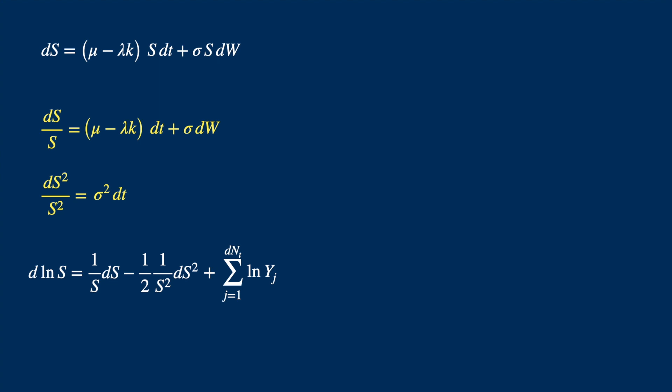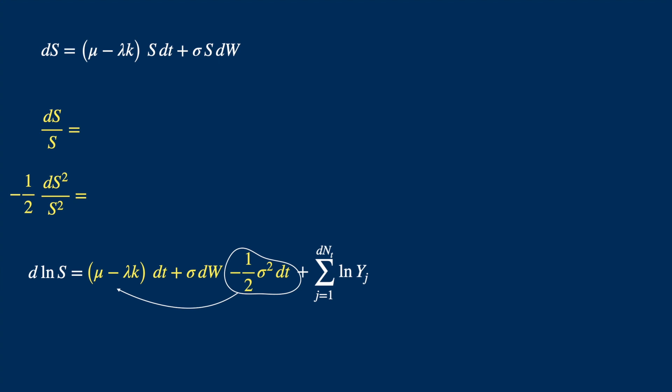We have minus half times this. So let's multiply both sides by minus 1 divided by 2. And now we can make the replacement. We can combine the dt terms and leave the jump part as it is.